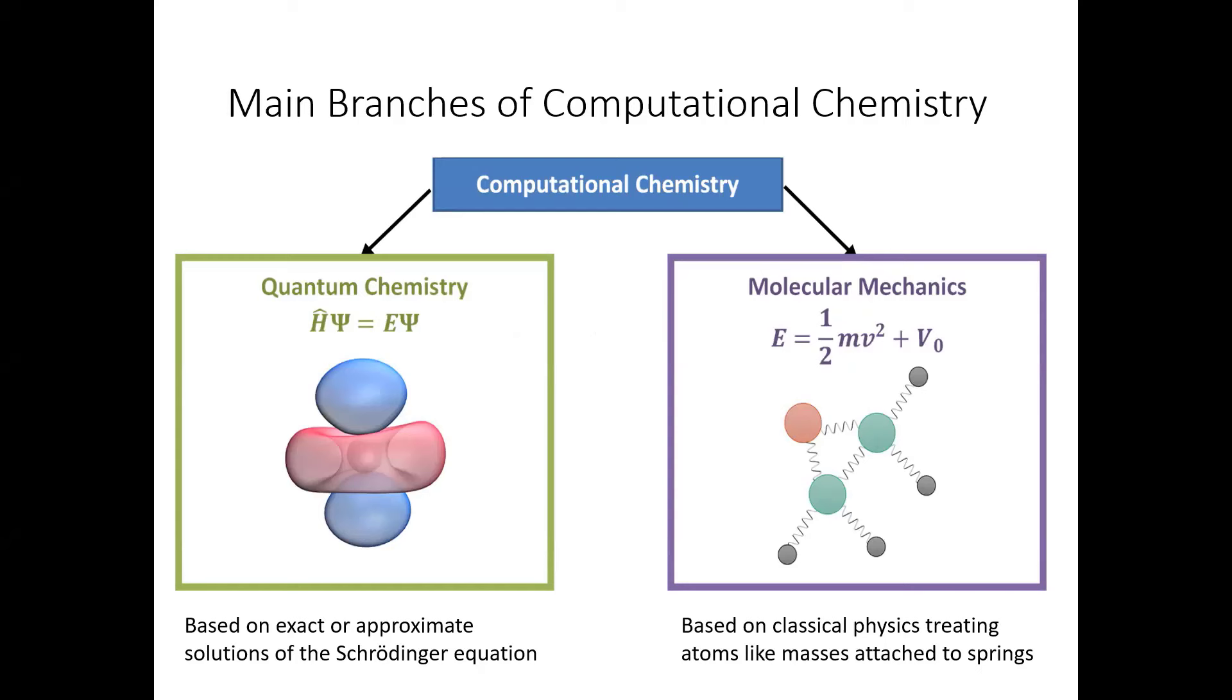So computational chemistry is a relatively new area of chemistry, and it's a very active area of research where mathematical models are implemented on computers and used to better understand chemical processes. Some uses of computational chemistry are to model things that you can't observe experimentally, and also to actually understand the results of experiments. Computational chemistry lets us see things on a much smaller scale than we might be able to in a lab context.